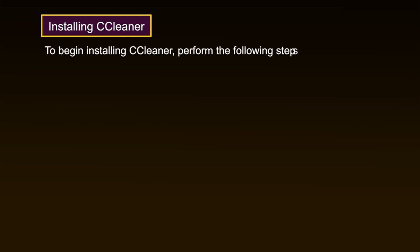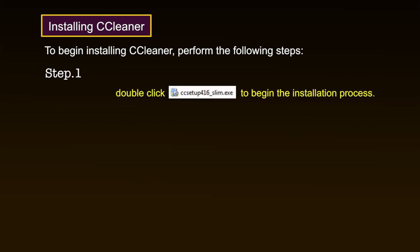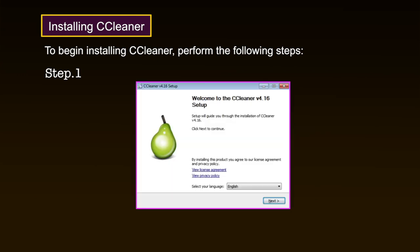Now let us see how to install CCleaner on a Windows system. Installing CCleaner is a relatively easy and quick procedure. Step 1: Double-click on the executable file to start the installation process. A warning dialog may appear; if it does, click Yes to activate the following screen.